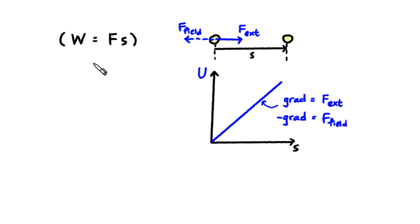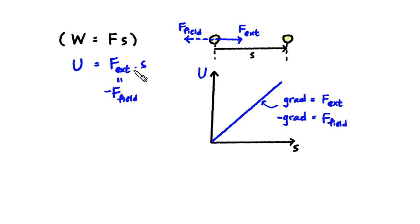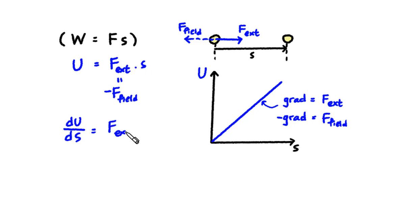Let's write out the equations. The potential energy comes from the external force doing positive work on the object, so U is external force times S. But the external force and the field force are always equal but opposite to each other, so the external force is actually the negative of the field force. So the potential energy gradient, which is dU/dS, is actually the external force. Therefore, the negative of the potential energy gradient will be the field force.